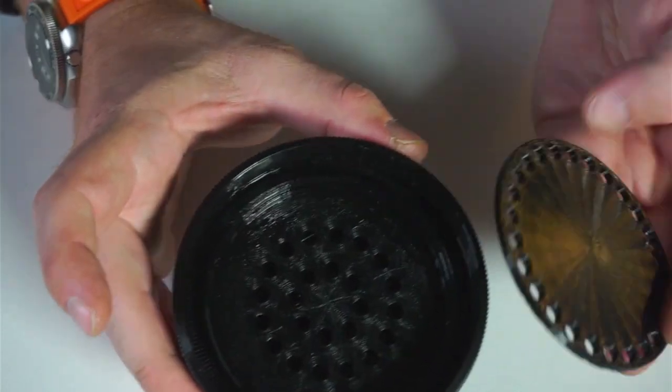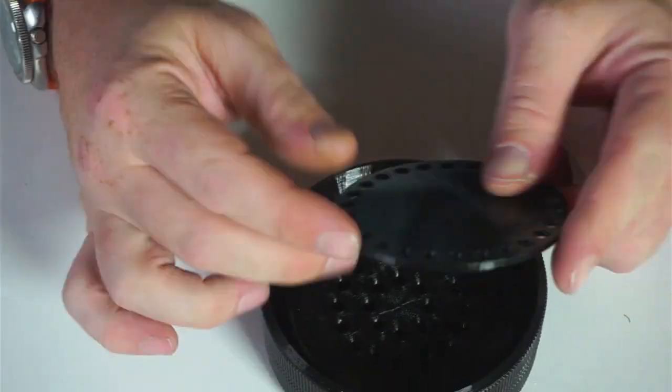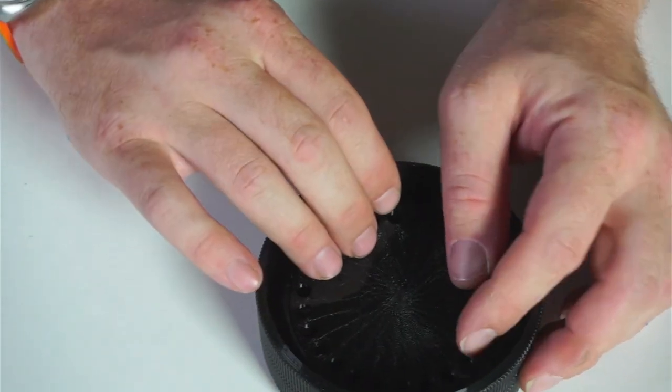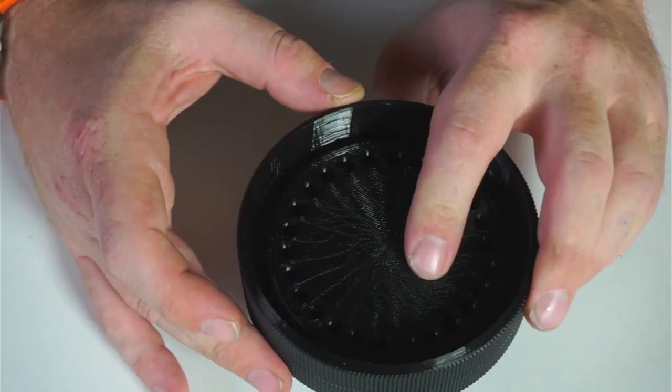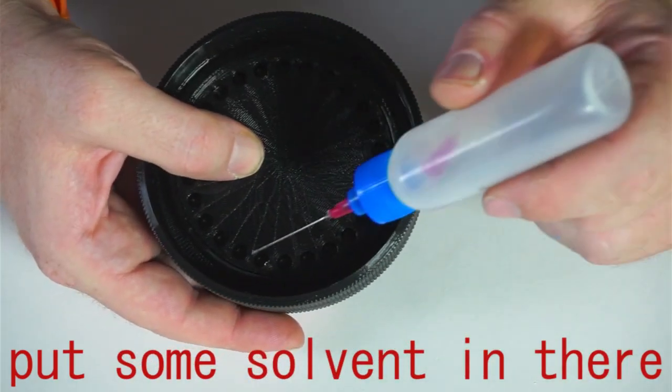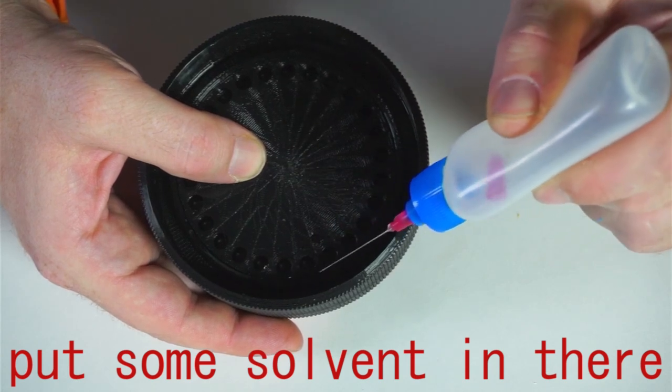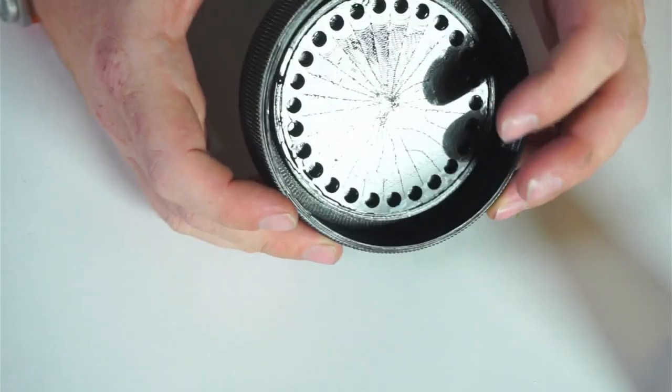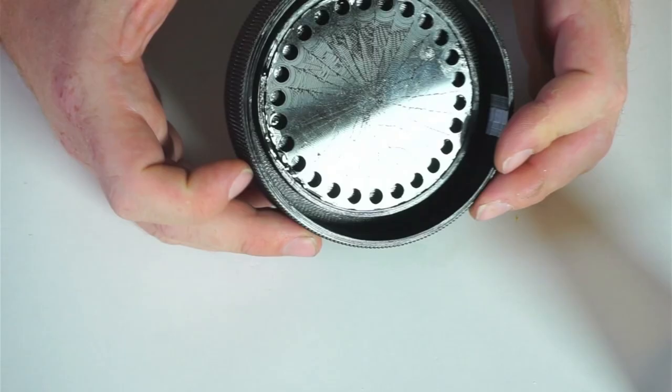So once the middle plate's in, we're going to do the last one. Again, that sits in a little ledge. And put some solvent in there. Kind of give that 20 or 30 minutes to dry.